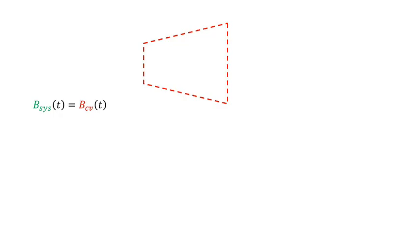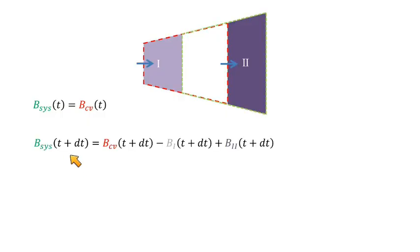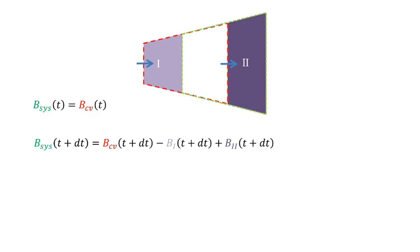Let's look at it mathematically. At our initial point, time t, the amount of B in the system and the amount of B in the control volume are the same, because they coincide. Now, as a little bit of time has gone by, what is my B in the system? B in the system equals B in the control volume minus what's in region I, because that's not part of our system, plus the part in region II, which is not part of the control volume. So B in the system equals B in the control volume minus B1 plus B2. This is total common sense just looking at our picture.